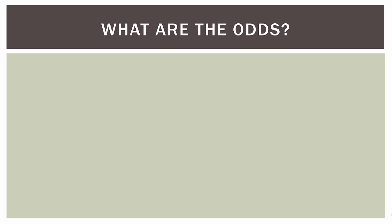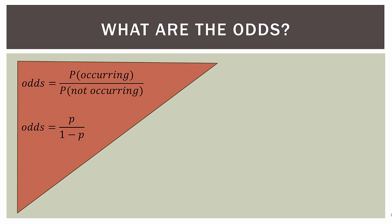So that was probability. Now what about odds? The odds is the probability of something occurring divided by the probability of it not occurring — the probability of an event divided by the probability of a non-event. We can think of it as odds equals P divided by one minus P. Remember, probability can only be as high as one, so the probability of something not happening is one minus P.